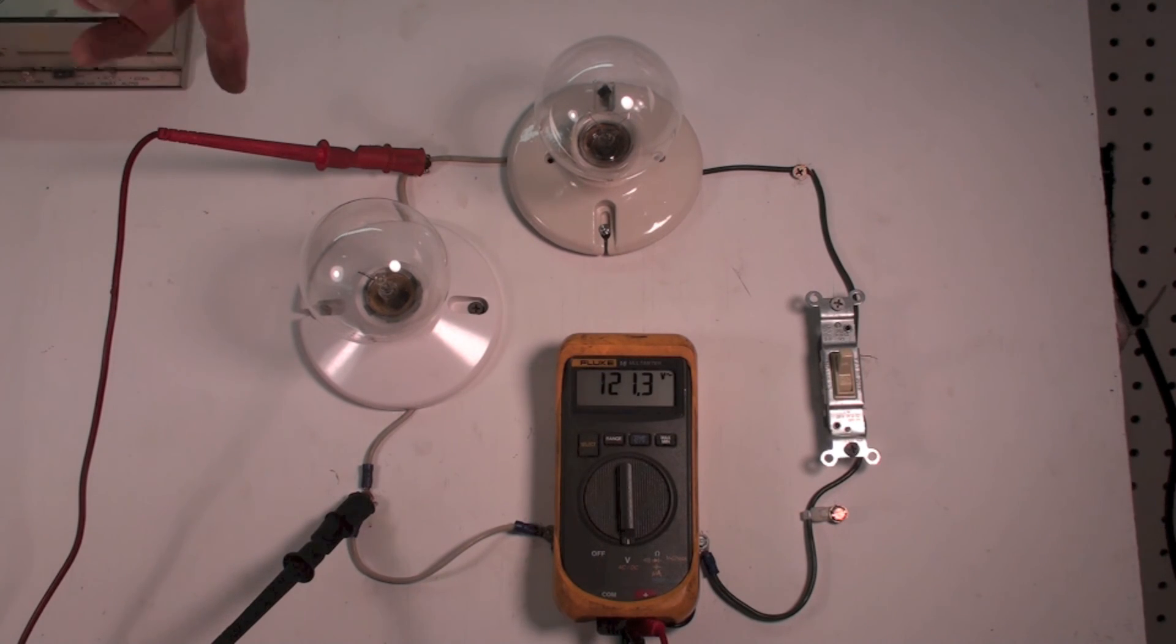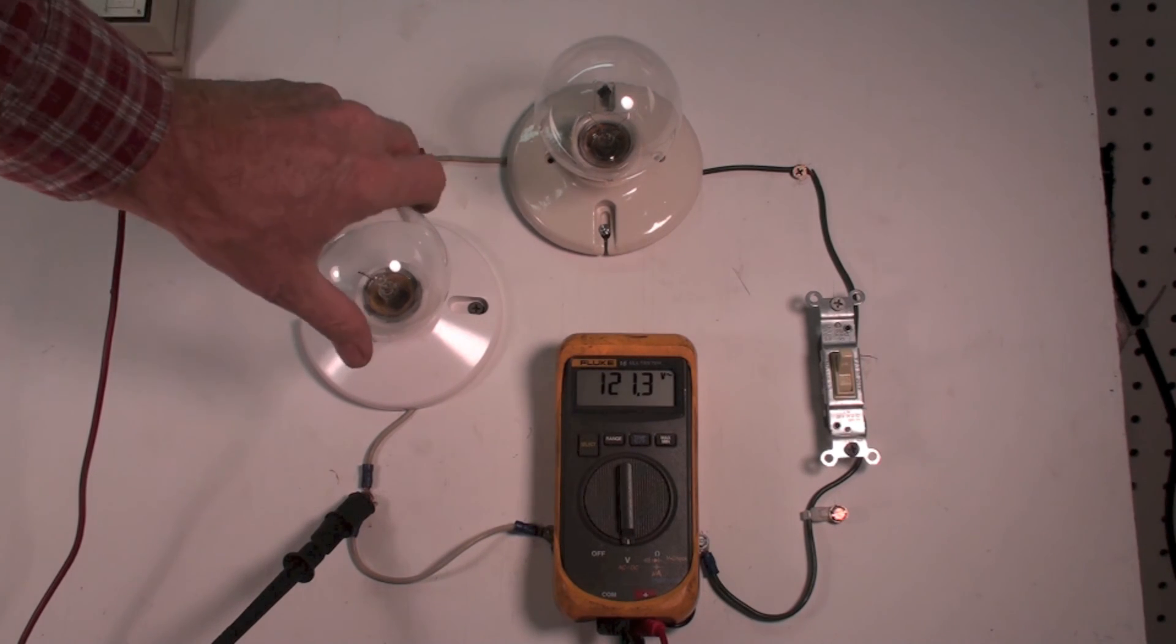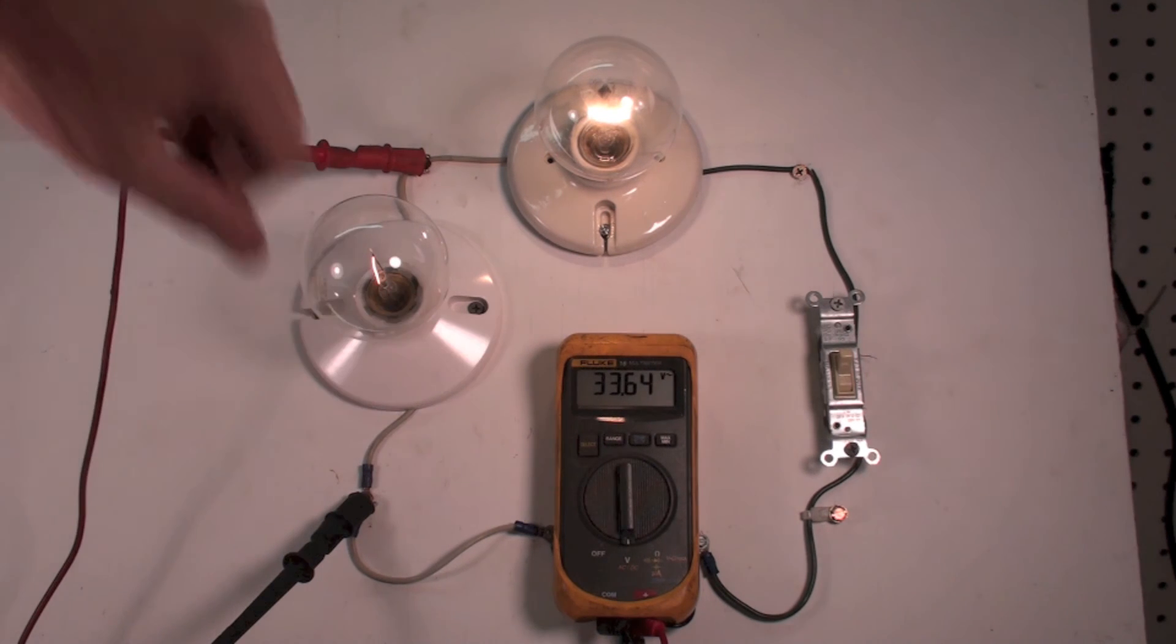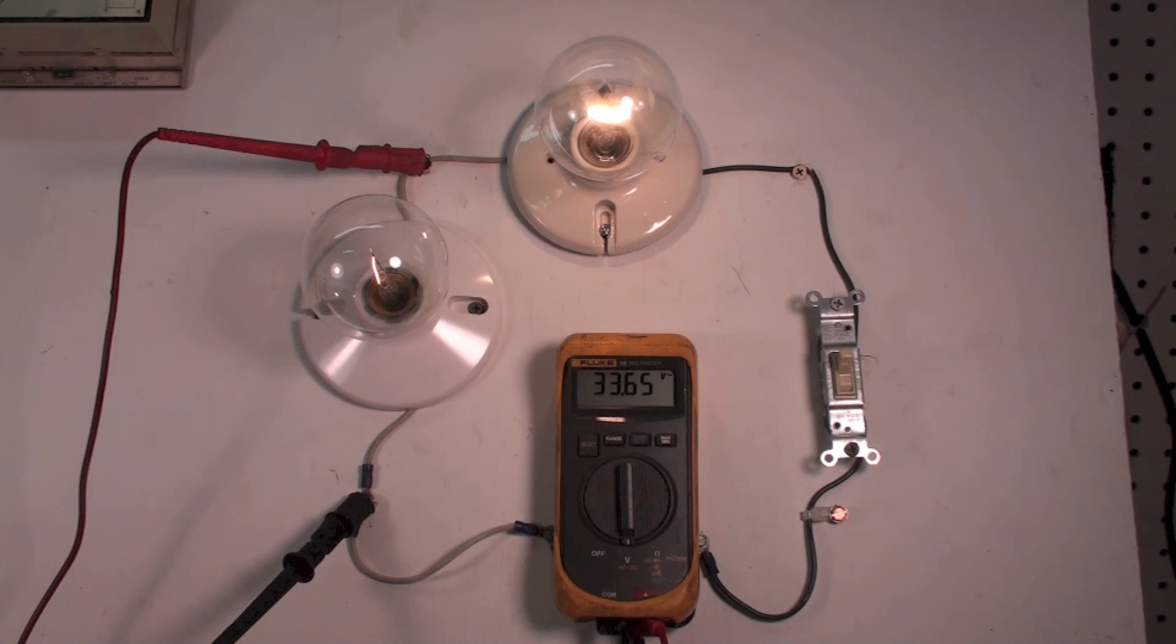Well in this case it has. Now if I hook it back up again, it comes back on, I go back to my 33. I hope this makes sense - may generate more questions than anything else, but that's a series load and that's voltage drop across a series load.